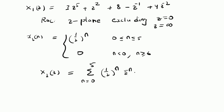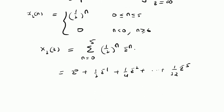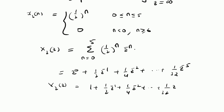By expanding this summation: at n equal to 0, 1 by 2 power 0 is 1, so we have Z power 0; at n equal to 1, we have 1 by 2 times Z power minus 1; plus 1 by 4, that is 1 by 2 squared, times Z power minus 2; and so on up to 1 by 2 power 5, that is 1 by 32, times Z power minus 5. So X2 of Z equals 1 plus 1 by 2 Z inverse plus 1 by 4 Z power minus 2, and so on up to 1 by 32 Z power minus 5.